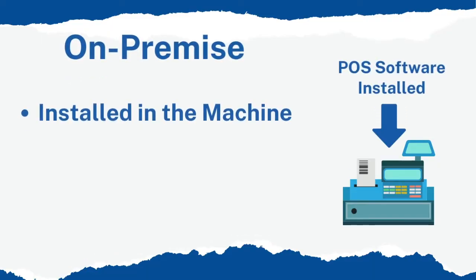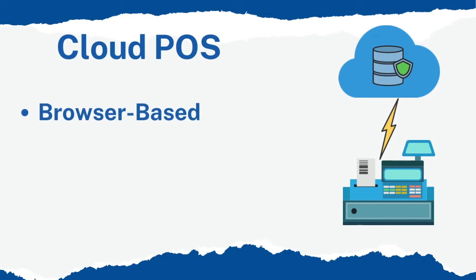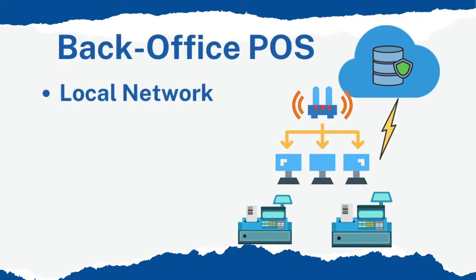There are two types of POS in the market: on-premise, where the software is installed on the POS hardware, and cloud-based, which is a browser-based POS with offline transaction support. You'll need an internet connection for a cloud-based POS. Cloud-based is advisable especially if you have more than one branch, as you'll want a consolidated sales report at your HQ.